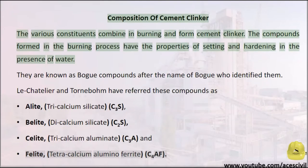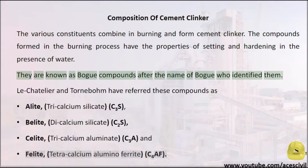Composition of cement clinker: the various constituents combine in burning and form cement clinker. The compounds formed in the burning process have the properties of setting and hardening in the presence of water. They are known as Bogue compounds, after the name of Bogue who identified them.